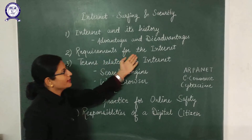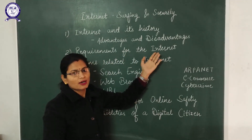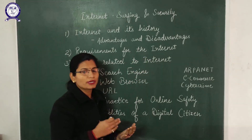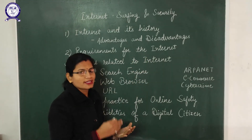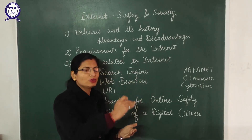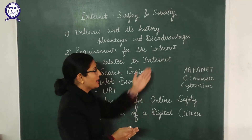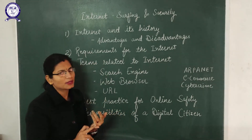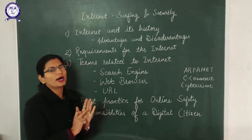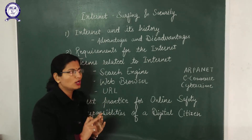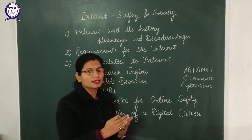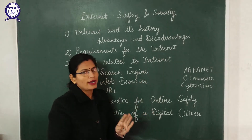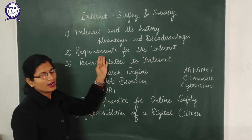What are the requirements when you are connecting to internet? Basically, you need initially a computer system or a digital device such as a laptop or computer. Second thing is a modem — a device which is used for sending your data from your computer to the internet and for receiving data from the internet. Third is an internet connection, which can be a dial-up connection or a broadband connection. Fourth, you require an Internet Service Provider — companies like Airtel, BSNL, and Jio are all ISPs which provide internet connections.